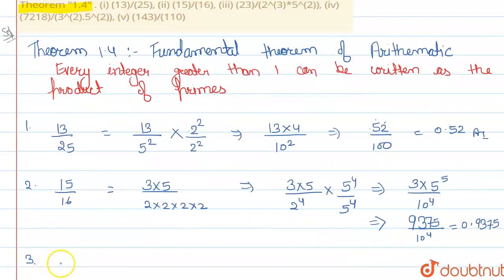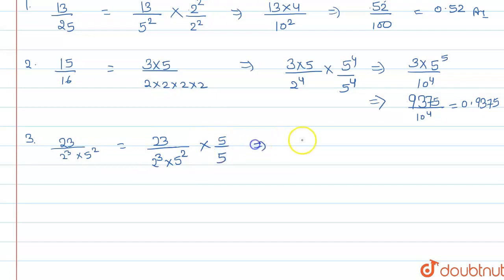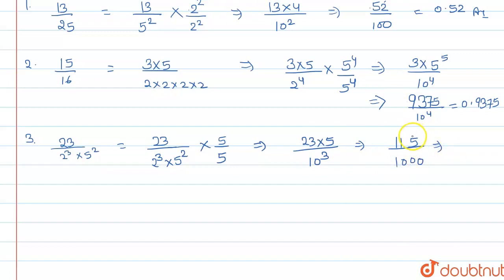The third rational is 23 divided by 2 to the power 3 into 5 to the power 2. Since 23 is a prime number, we multiply numerator and denominator to make 5 to the power 3, giving us 10 to the power 3. So we have 23 into 5 equals 115, divided by 10 to the power 3. We count three digits — 1, 2, 3 — and place the point, giving 0.115.